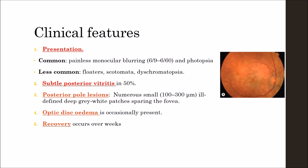Patients commonly present with painless monocular blurring with a vision of about 6/9 to 6/60, accompanied by photopsia. Less commonly, they present with floaters, scotomas, and dyschromatopsia. There is subtle posterior uveitis in 50 percent of cases.